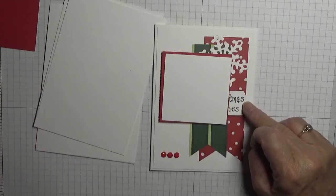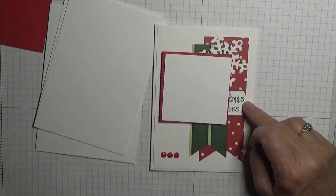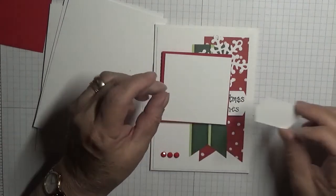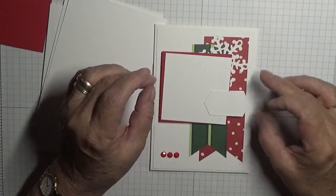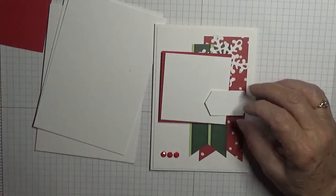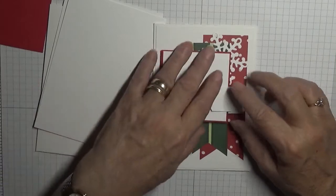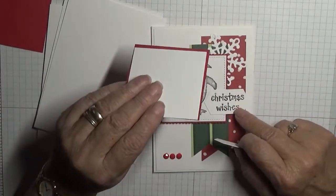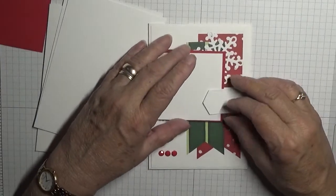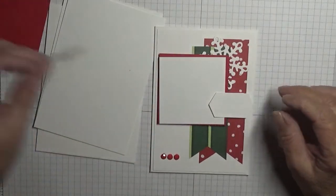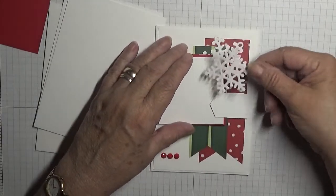I also used the third one up of these nesting stitch dies for that, for the sentiment. The sentiment Christmas wishes is a non-stamping up stamp. It's just one I had in my stash which I'll use.